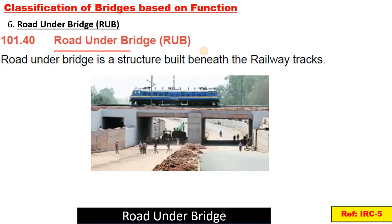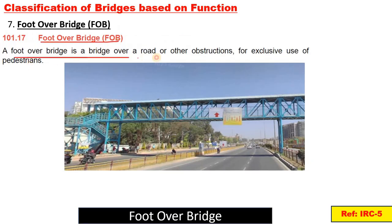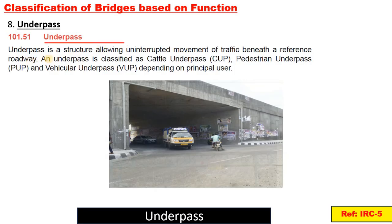Next is RUB, road under bridge. RUB is a bridge over a road or other obstructions for the exclusive use of pedestrians — also referred to as an underpass.